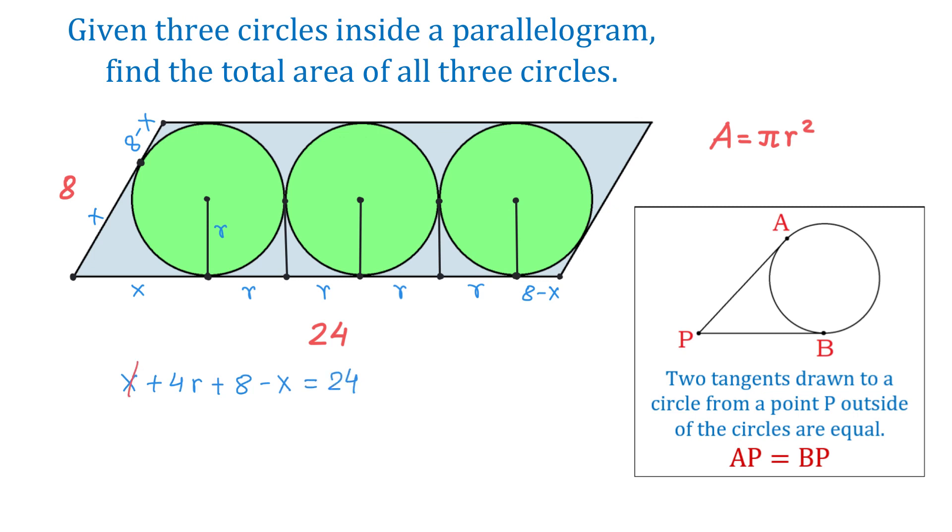x and negative x will cancel, then 4r equals 24 minus 8, then 4r equals 16, and r equals 4.